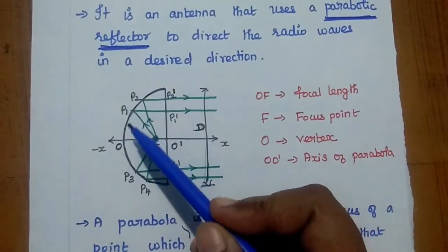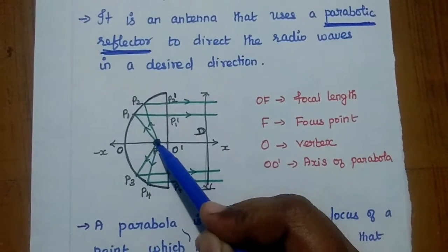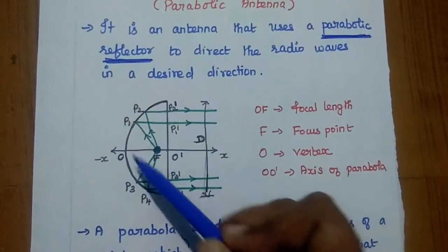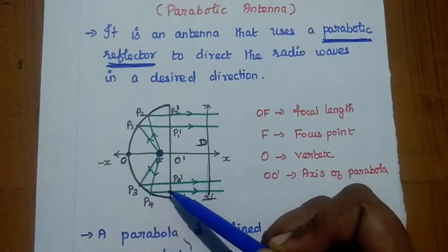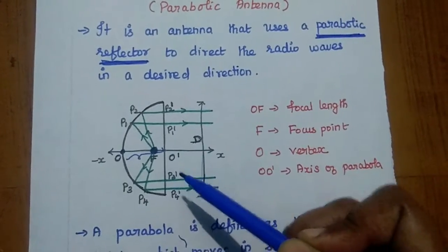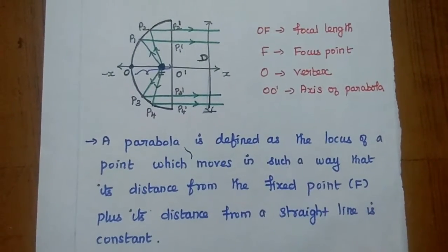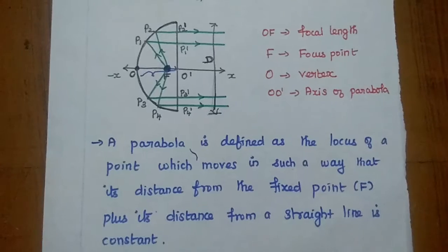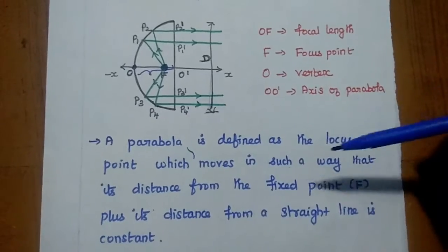This is the parabolic reflector diagram. This point source radiates the signal in 360 degrees. Here this is the parabolic reflector. This O represents the vertex. This F is the focus point of this paraboloidal reflector. So this OF is nothing but the focal length. The parabola is defined as the locus of a point which moves in such a way that its distance from the fixed point F plus its distance from a straight line is constant.